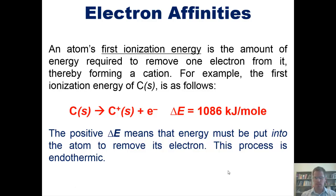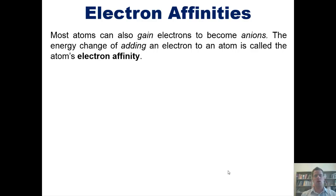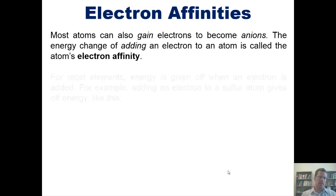Now in contrast with this example, most atoms can also gain electrons to become anions. The energy change of adding an electron to an atom is called an atom's electron affinity. Remember, affinity is a term that means how much you want something. If you're an element, affinity is a measure of how much you want an electron. So for most elements, energy is given off when an electron is added.